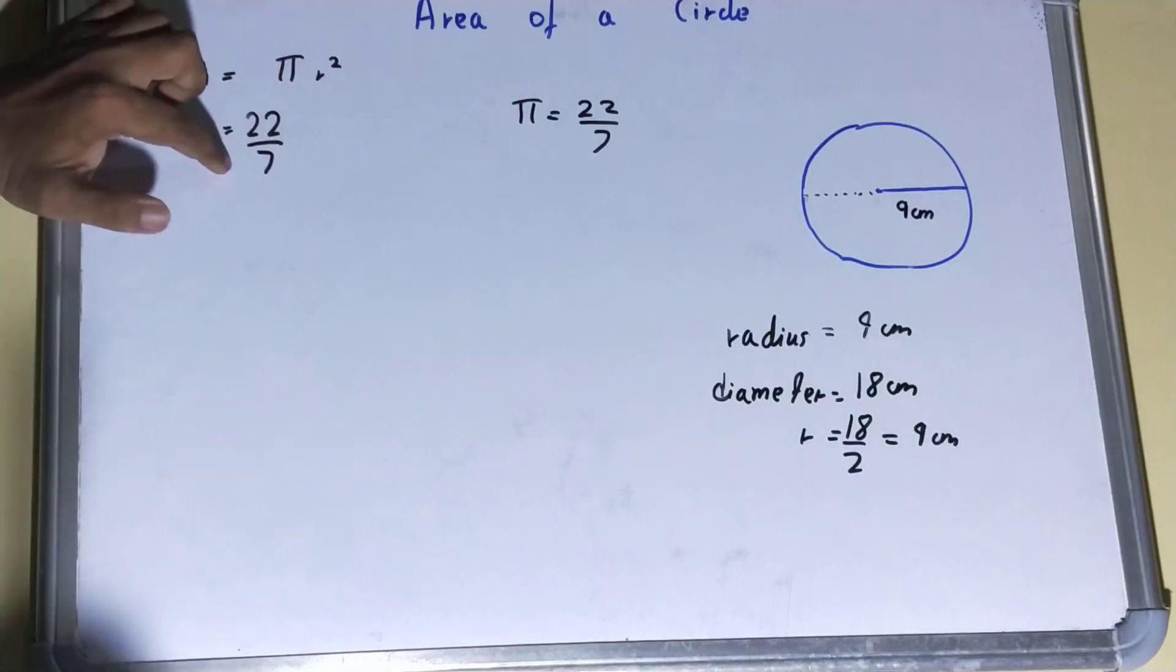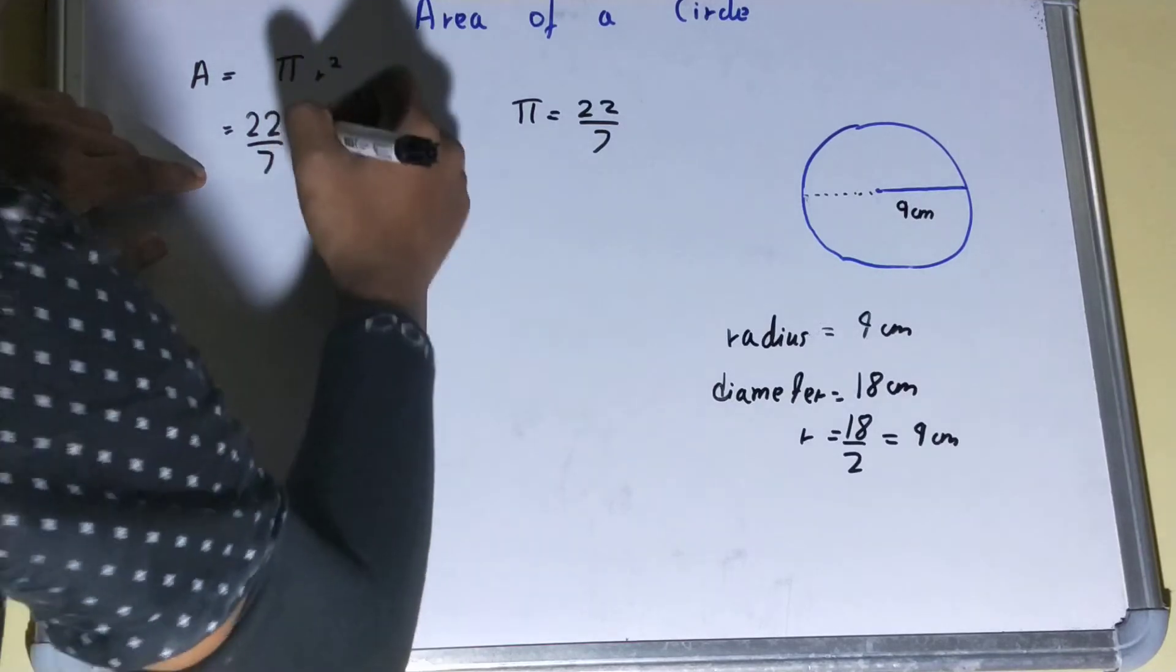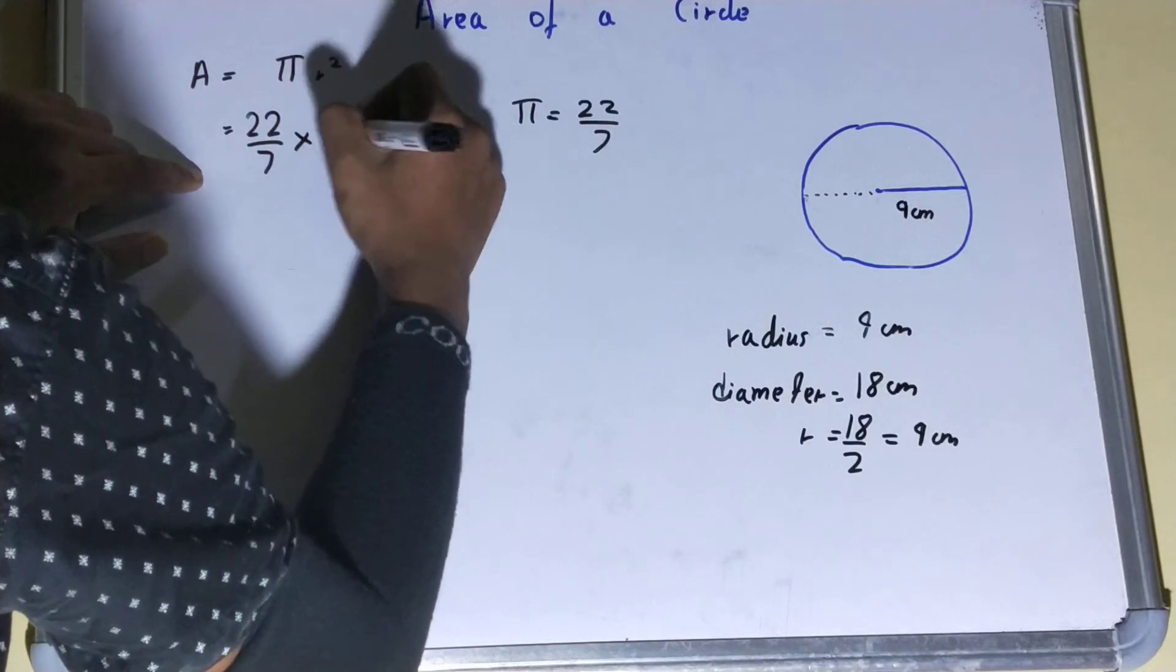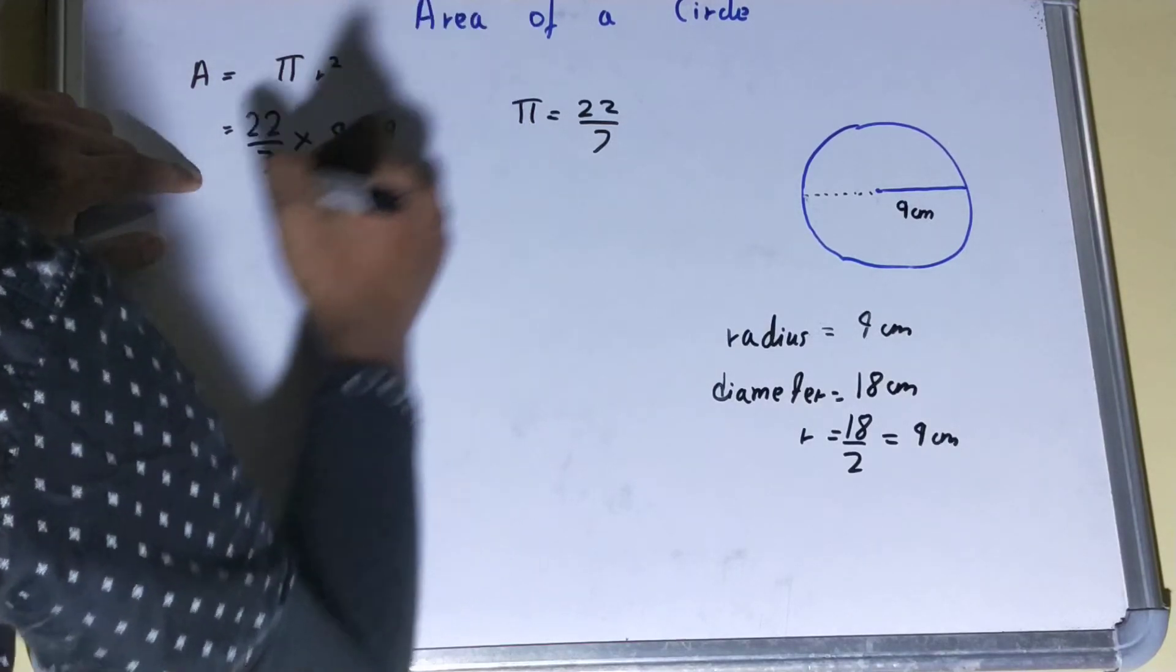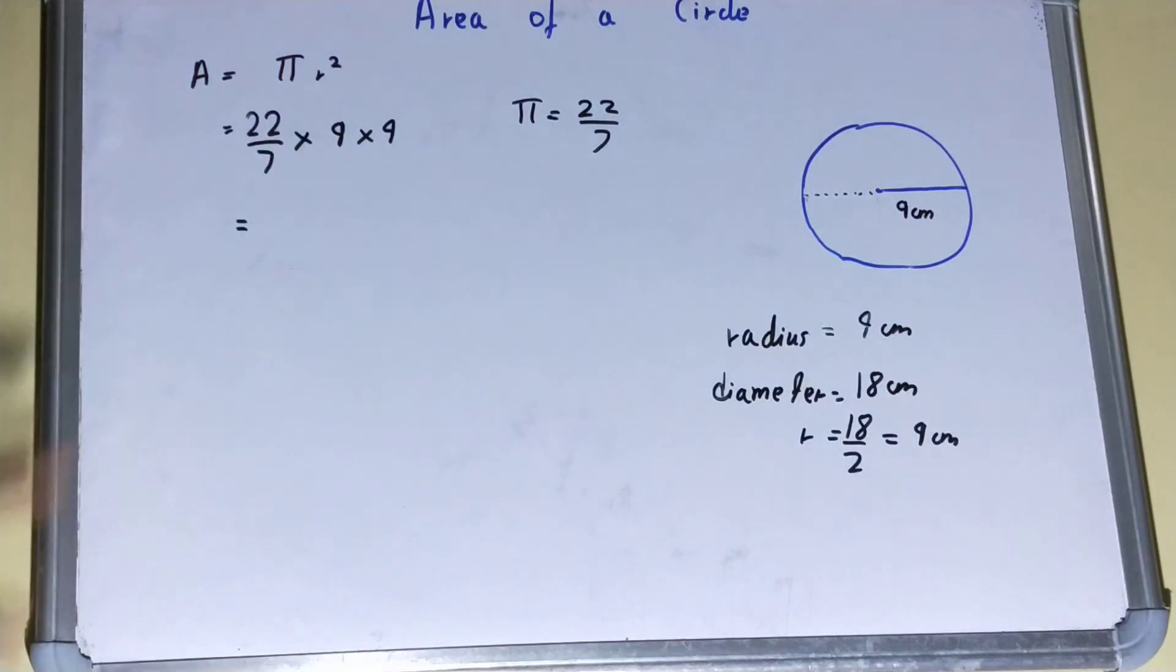So let's just put this value in place of pi. That is 22 by 7 into 9 into 9. You can see, in place of pi we have put 22 by 7. In place of r, because it was r square, we have put 9 into 9.